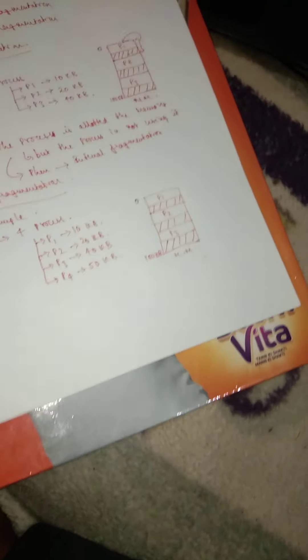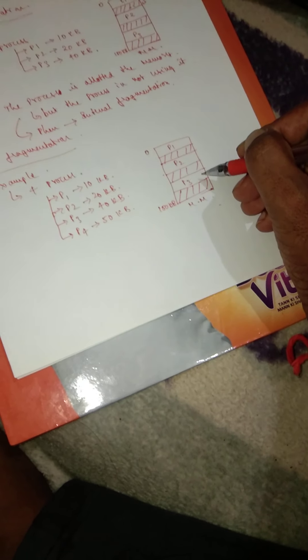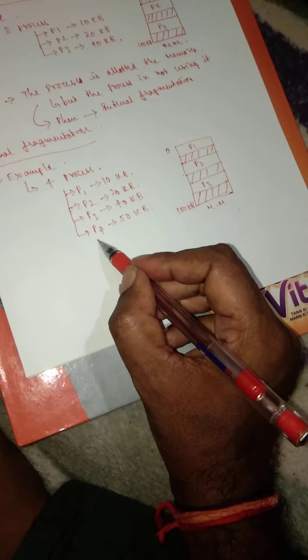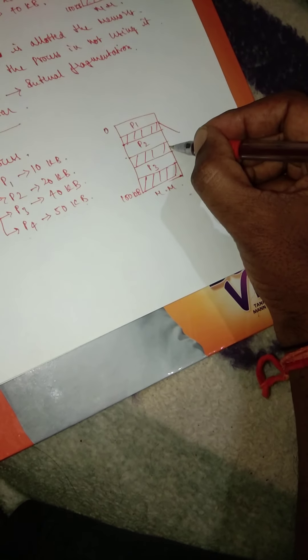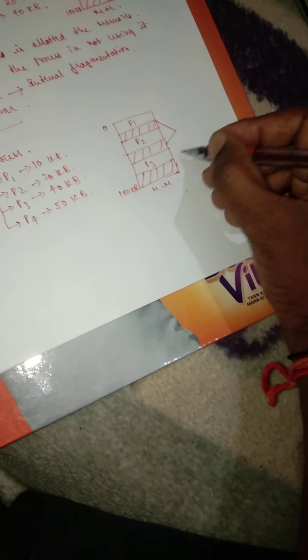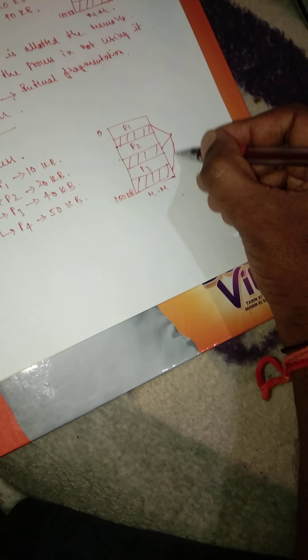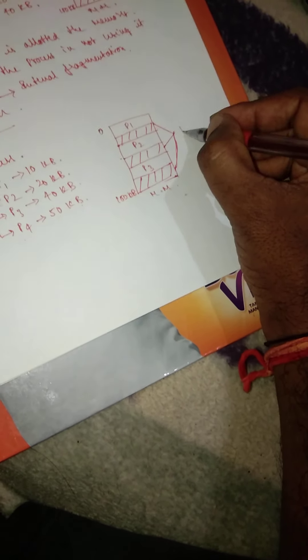Currently there are three processes running in the main memory. Now P4 process requires 50kb. Let us assume that this memory, as well as this memory and this memory, is enough for this P4 to be executed.